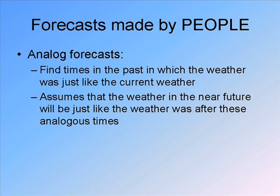When they make forecasts of how many hurricanes we're going to see this fall, that's usually largely based on an analog forecast. They look at years that looked a lot like the present year — for example, the distribution of warm water in the Atlantic and other factors that affect hurricanes. They find years that look similar and ask how many hurricanes happened in those years. That's the type of analog forecast we actually do all the time in atmospheric sciences.